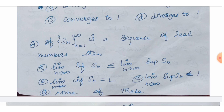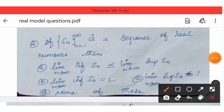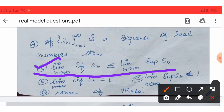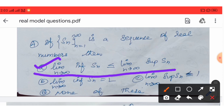If we look at option A: the limit infimum of Sn ≤ limit supremum of Sn. So option A is the correct answer.